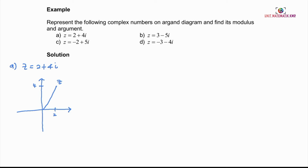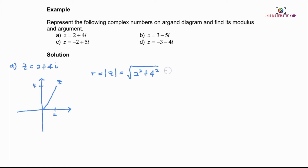To find R, the modulus of Z, we use the formula: square root of A squared plus B squared. In this case, we have the square root of 2 squared plus 4 squared, which gives us the square root of 20.